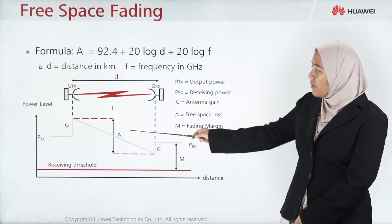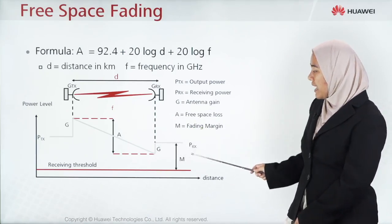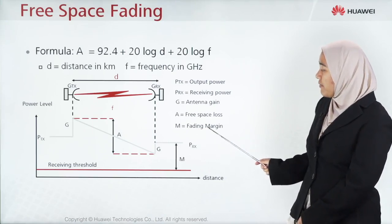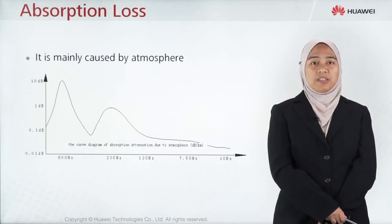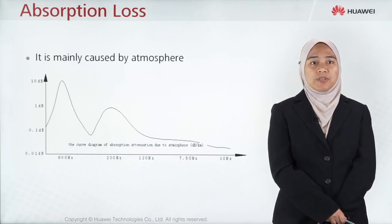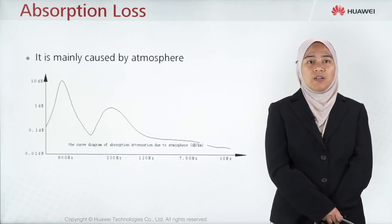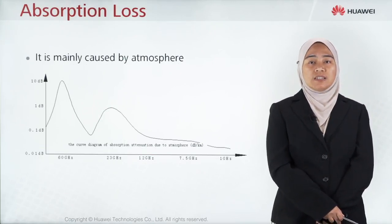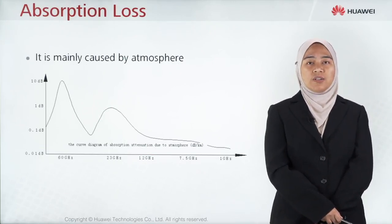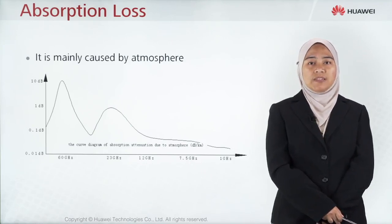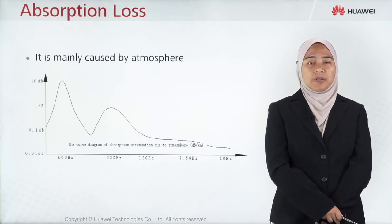The receiving power PRX is higher than the receiving threshold. This is called the M fading margin. Absorption loss is mainly caused by the atmosphere. Absorption for microwave frequencies lower than 12 GHz is smaller than 0.5 dB per kilometer. Compared to the free space loss, this absorption loss can be ignored.